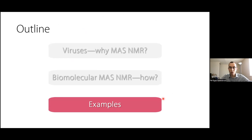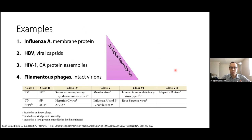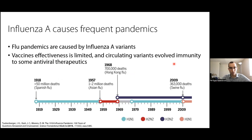Now that we understand why and how magic angle spinning NMR works and how it is used to study viruses, I would like to share a few unique examples demonstrating these capabilities. I want to note that I'm only going to show a few selected examples out of many that exist. The table from our review includes all the viruses studied by magic angle spinning NMR spectroscopy, and I'm showing selected examples for influenza A, hepatitis B virus, HIV-1, and filamentous phages. I'll begin first with influenza A, which causes upper respiratory disease and several pandemics over the last century — the most notorious being the 1918 pandemic, and more recently the 2009 swine flu.